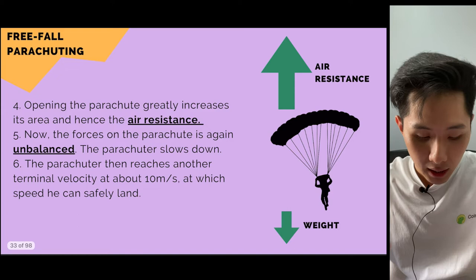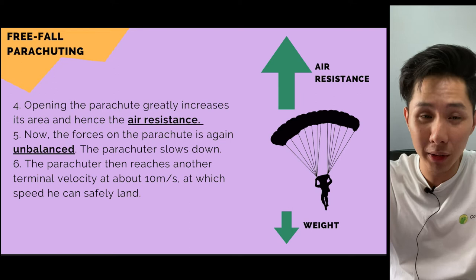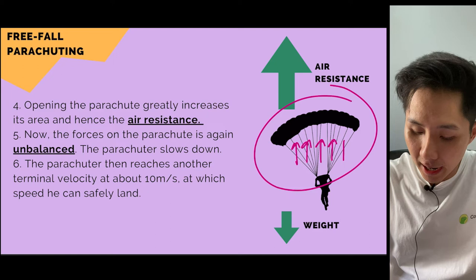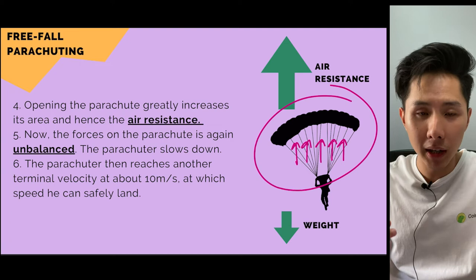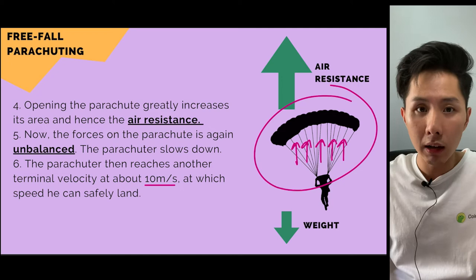The skydiver is falling at a very fast rate and can't just stop suddenly. He needs a parachute. When the parachute opens, it greatly increases air resistance. The air resistance becomes much higher than the weight, so the forces become unbalanced again — there's an upward force causing the parachute to decrease in speed. The skydiver then reaches a new, lower terminal velocity of around 10 metres per second, at which he can safely land.